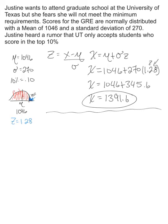That was for the top 10%. But what if she wanted to be in the top 5%? We still have a normal distribution with a mean of 1,046. Now we're looking for the top 5%, and 5% equals 0.05.